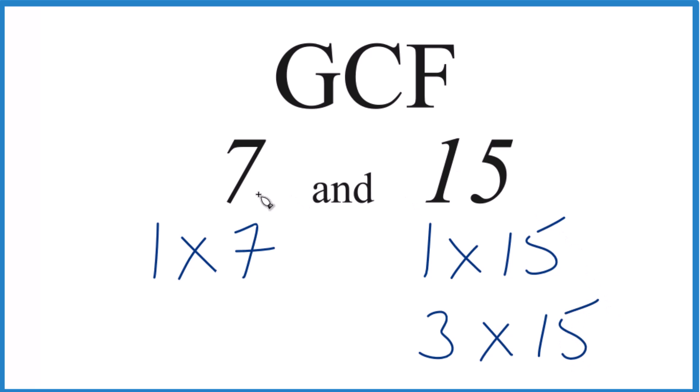So if we look at the factors, the only thing in common here is 1. 1 goes into 7 evenly, 1 goes into 15 evenly. So the GCF, the greatest common factor for 7 and 15, that's 1. That's it.